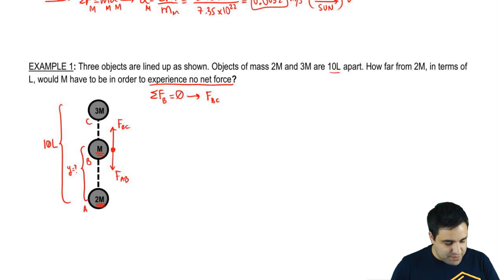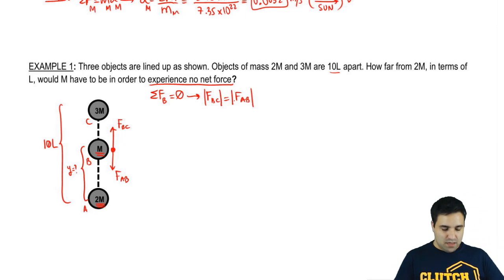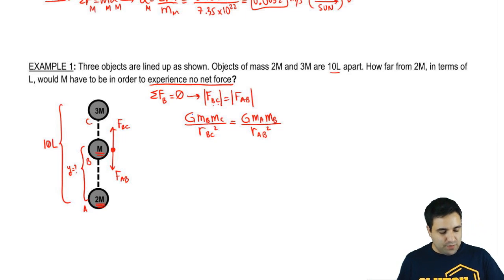They're going to have the same magnitude. So fbc is going to have the same magnitude as fab. To solve this, we're now going to replace fbc and fab with their equations. So remember f is G m1 m2 over r squared. So in this case it can be G mb mc divided by the distance between b and c. Remember little r is the distance, not the radius. And then this is G ma mb over the distance between a and b squared. Right away I hope you realize that G's cancel and mb's cancel as well.